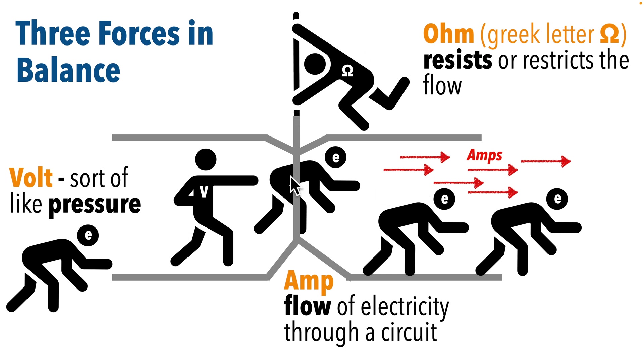But things are in balance. Ohms refers to resistance. This guy here restricts the flow of our crouchy electron guys. More resistance, fewer crouchy electron guys getting through during a given period. So again, these factors are in balance.